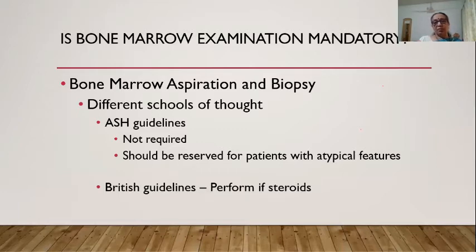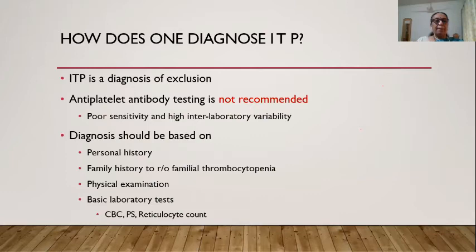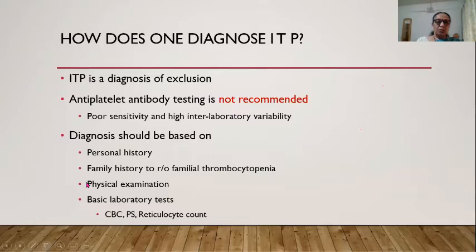Whether bone marrow examination is mandatory has been debated for years. ASH guidelines say it should be reserved for atypical features, while British and Indian IAP guidelines recommend performing it if steroids are to be given. ITP is a diagnosis of exclusion. Anti-platelet antibody testing has poor sensitivity and high inter-laboratory variability and is not recommended. Diagnosis should be based on history, family history, physical examination, and basic tests.